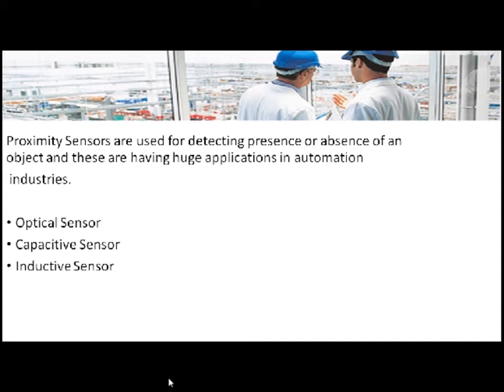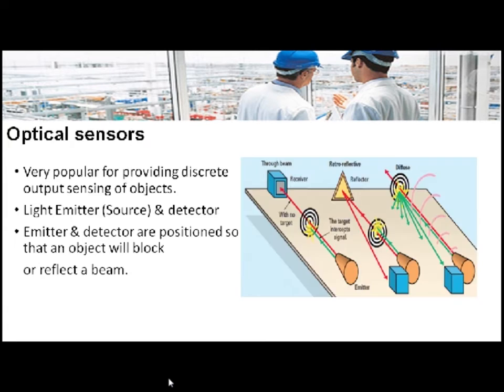There are various types of proximity sensors like optical sensor, capacitive sensor, inductive sensor, hall effect based sensor and reed relay based sensor etc. Out of all these, optical, capacitive and inductive are most commonly used, and in this video we will discuss about optical sensors.